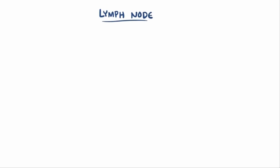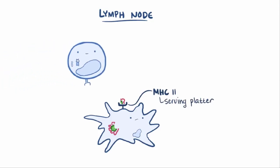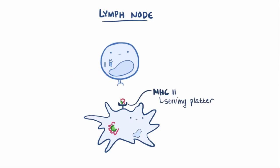The dendritic cell then takes the antigen to the nearest lymph node — the draining lymph node — where it presents the antigen on its surface using an MHC class II molecule, which is basically a serving platter for CD4-positive T cells to come check out.